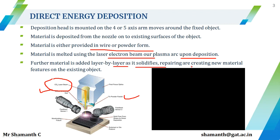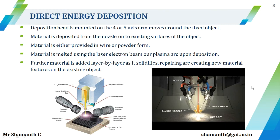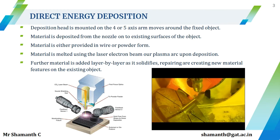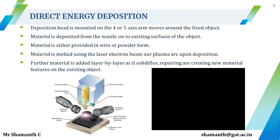This process is used for repairing and adding new material features on an existing object. A demonstration video shows the powder being flown through the pipes and nozzle, with fabrication taking place onto a previously built part. Generally, parts made up of ferrous and non-ferrous materials can also be used for fabrication purposes.